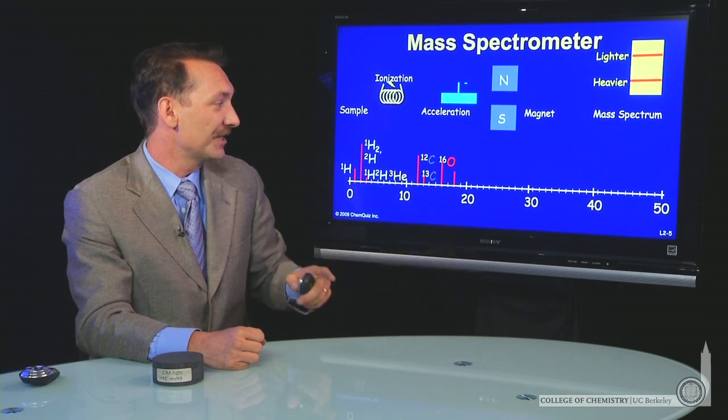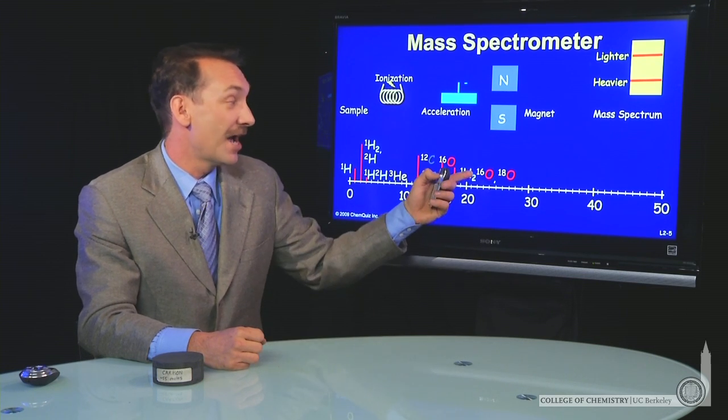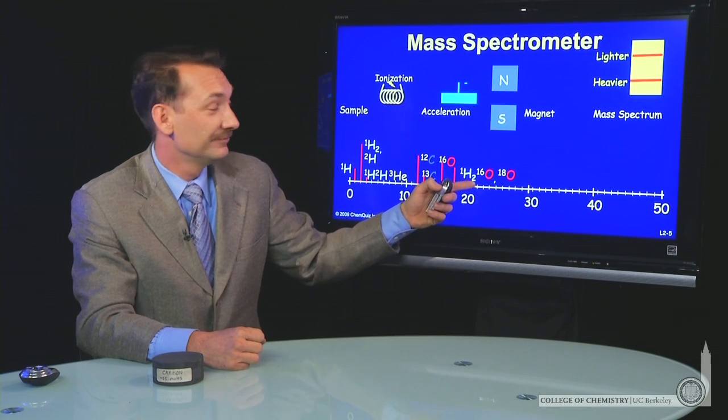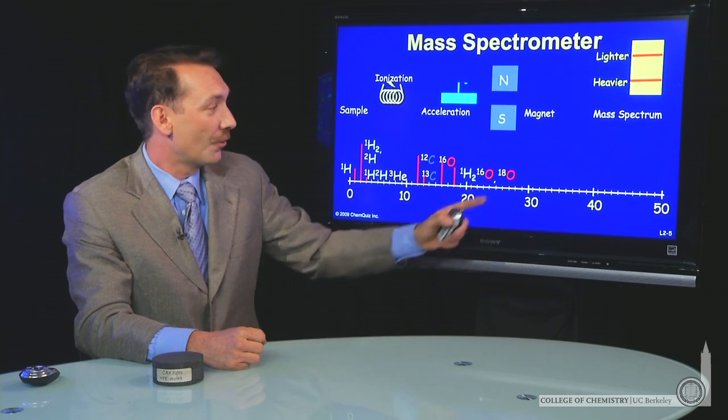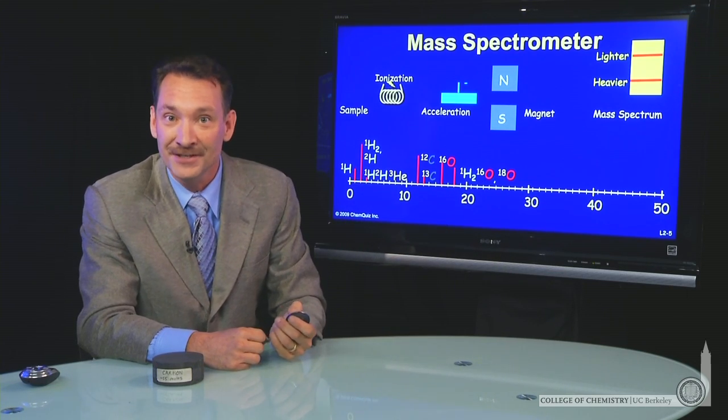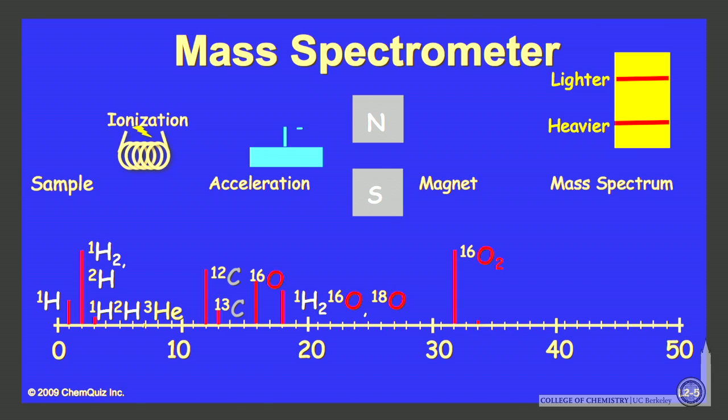Here's oxygen 16. At mass 18, you could have a water molecule with oxygen 16 and two protons, two hydrogen atoms. Or you could have oxygen 18, the isotope.